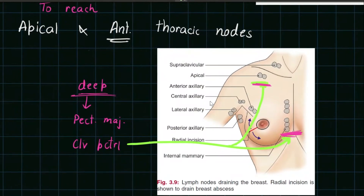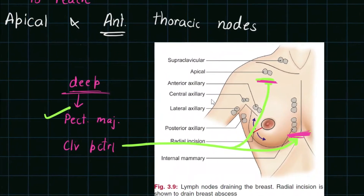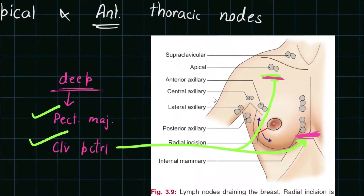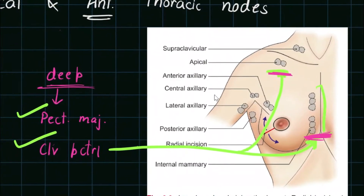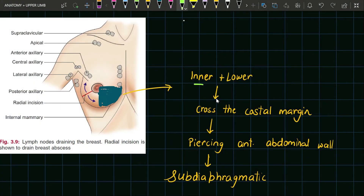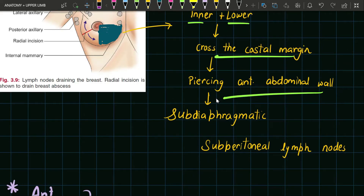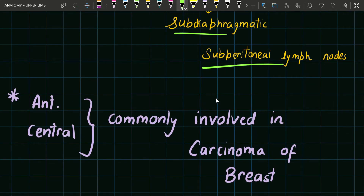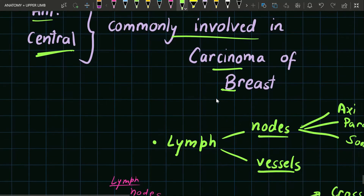Lymphatics from the deep surface of the gland pierce the pectoralis major muscle and clavipectoral fascia to reach the parasternal group and the apical group of lymph nodes. Lymphatics from the inner and lower part of the mammary gland cross the costal margin, piercing the anterior abdominal wall to reach the subdiaphragmatic and subperitoneal lymph nodes. One important point: the anterior and central group of lymph nodes are commonly involved in carcinoma of the breast.